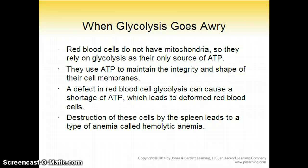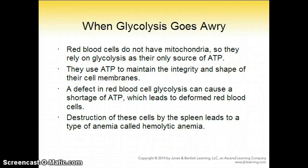Glycolysis can go awry. Red blood cells do not have mitochondria, so they rely on glycolysis as their only source of ATP. They use this ATP to maintain the integrity and shape of their cell membranes. A defect in red blood cell glycolysis can cause a shortage of ATP, which leads to deformed red blood cells. Destroying these cells by the spleen leads to a type of anemia called hemolytic anemia.